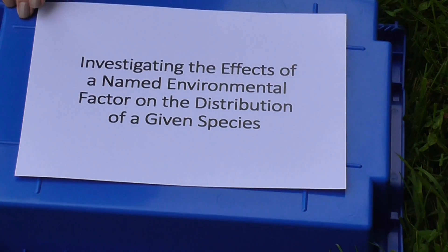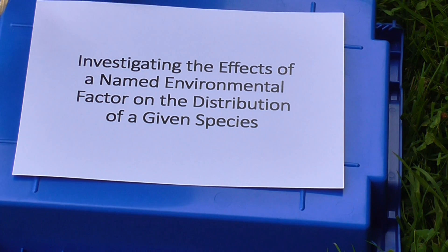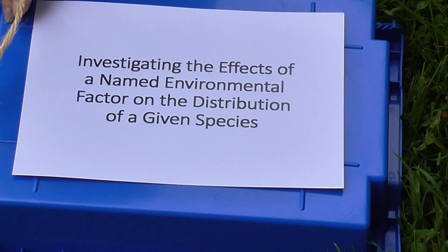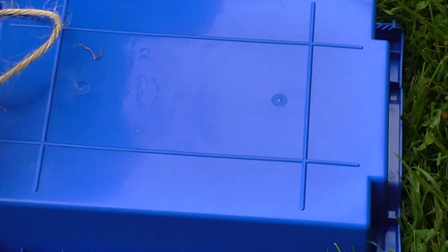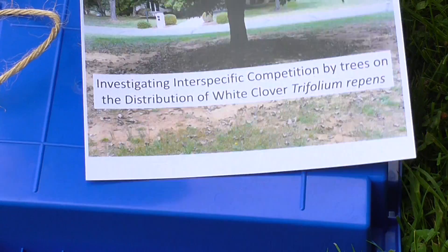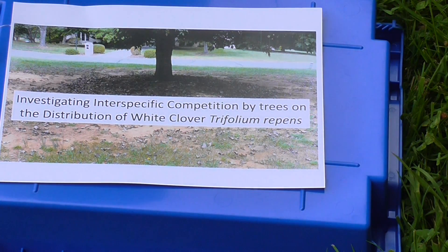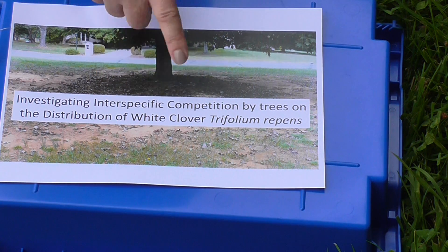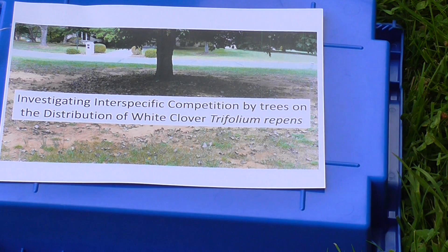I'm going to show you how to do one of the required A-level biology practicals. This is required for the full A-level, but not for the AS-level. It's an investigation into the effects of a named environmental factor on the distribution of a given species. What we're actually going to investigate today is the effects of interspecific competition by trees on the distribution of white clover, which is Trifolium repens — a very common grassland plant species in this country.